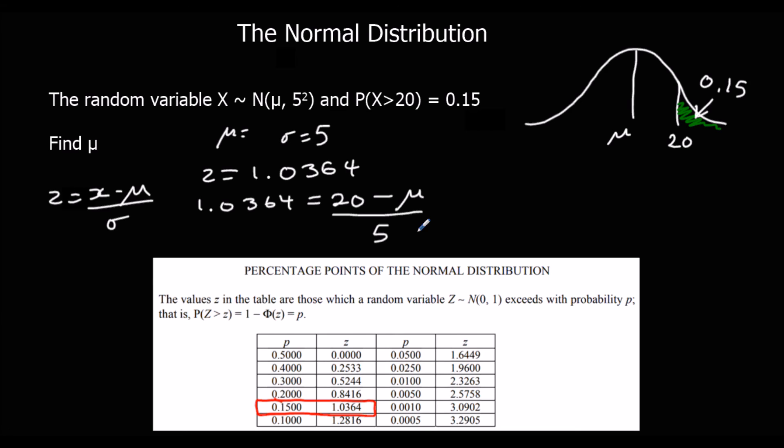Which gives us 5.182 equals 20 minus the mean. Plus the mean to both sides, so 5.182 plus the mean is equal to 20, and subtract 5.182 from both sides, and we get a mean of 14.818.